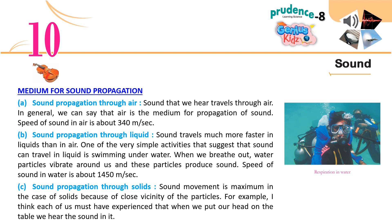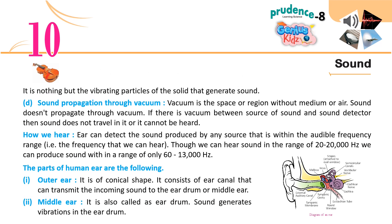Sound propagation through solids: sound movement is maximum in solids because of the close vicinity of particles. For example, when we put our head on a table, we can hear sound through it — this is the vibrating particles of the solid generating sound. Sound propagation through vacuum: vacuum is a space or region without medium or air. Sound does not propagate through vacuum; if there is vacuum between a sound source and a detector, sound cannot be heard.